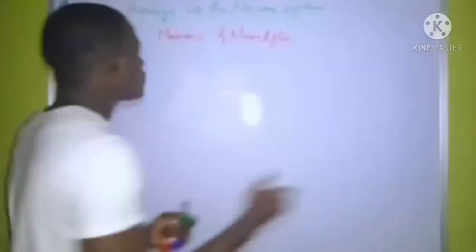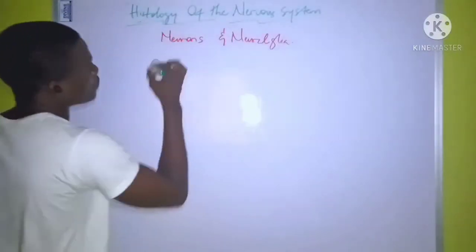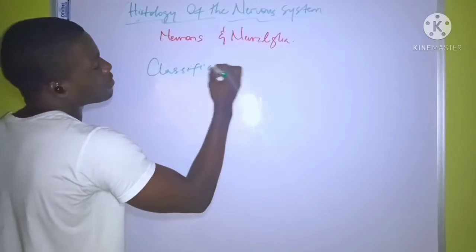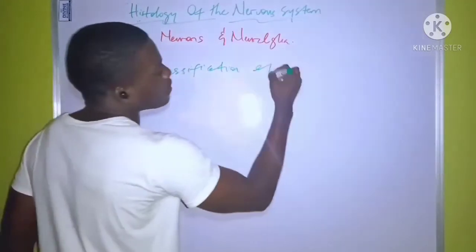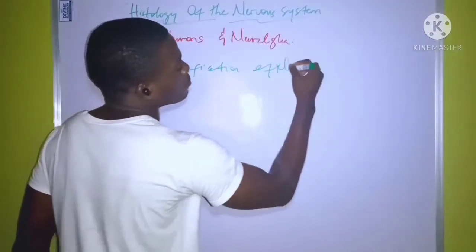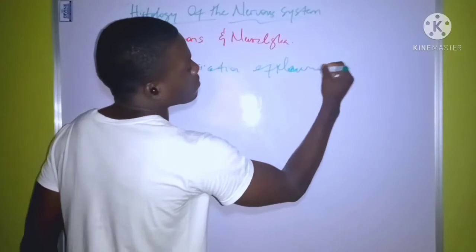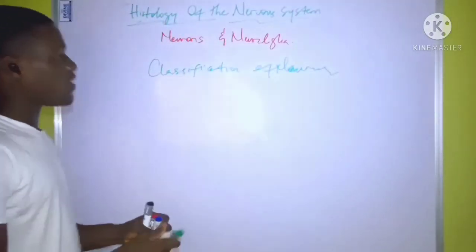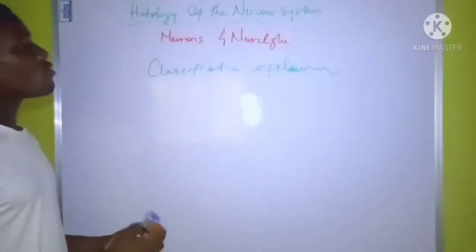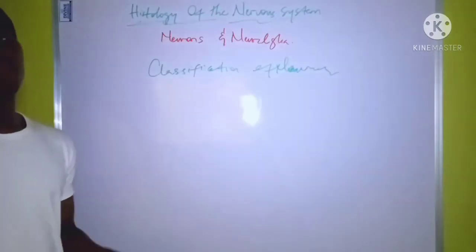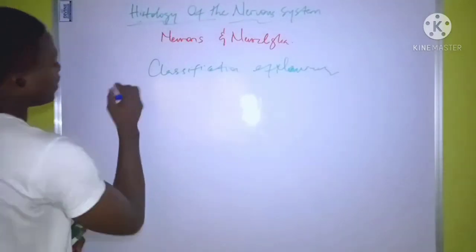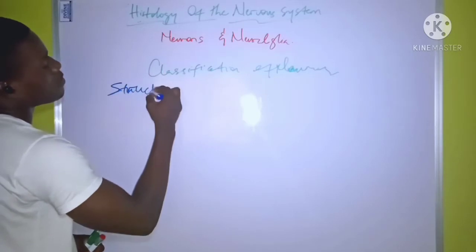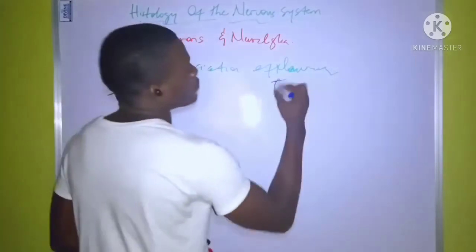The next topic we will talk about is the classification of neurons. Neurons can be classified into two ways: they can be classified based on their structure, and they can also be classified based on their function.